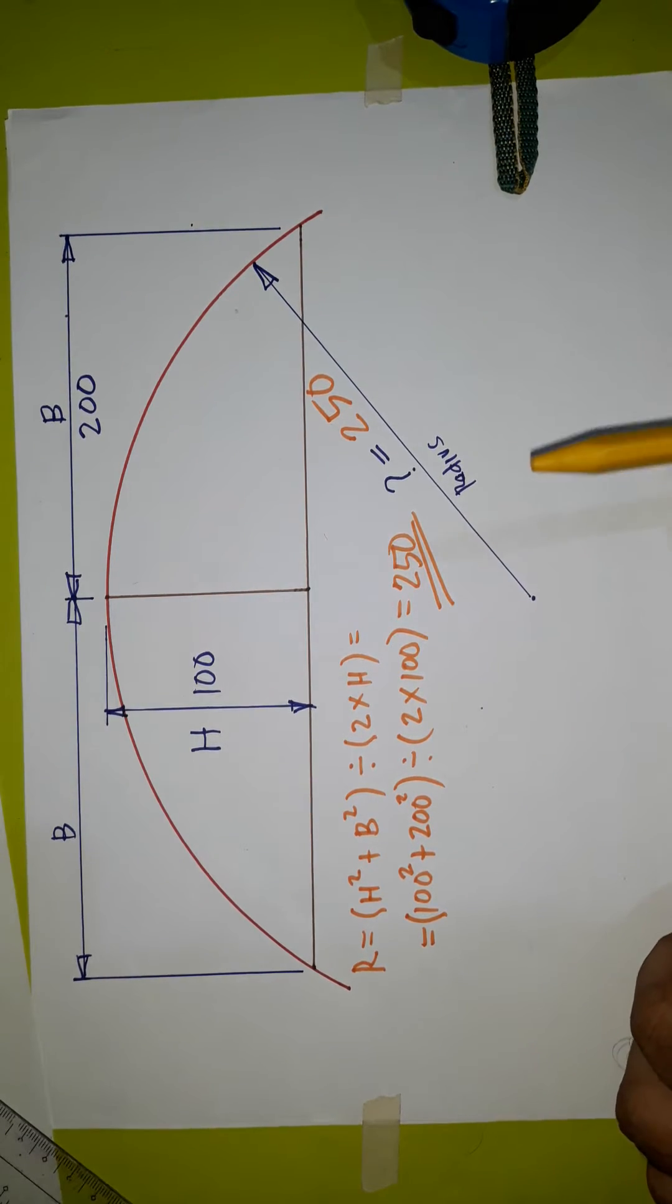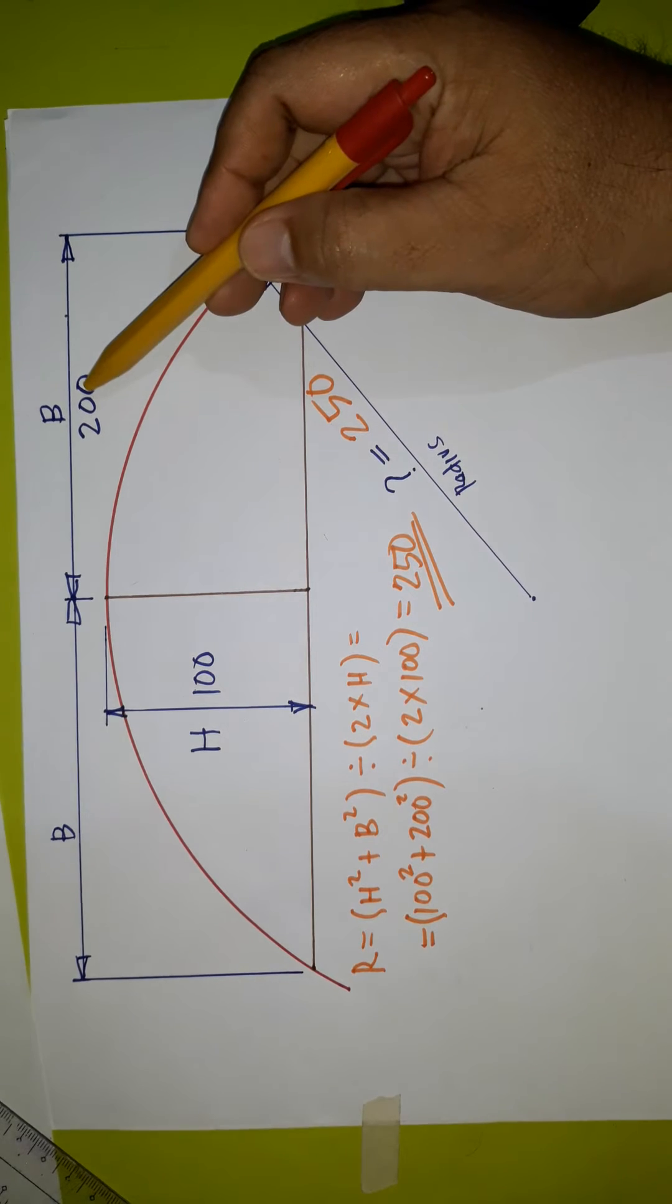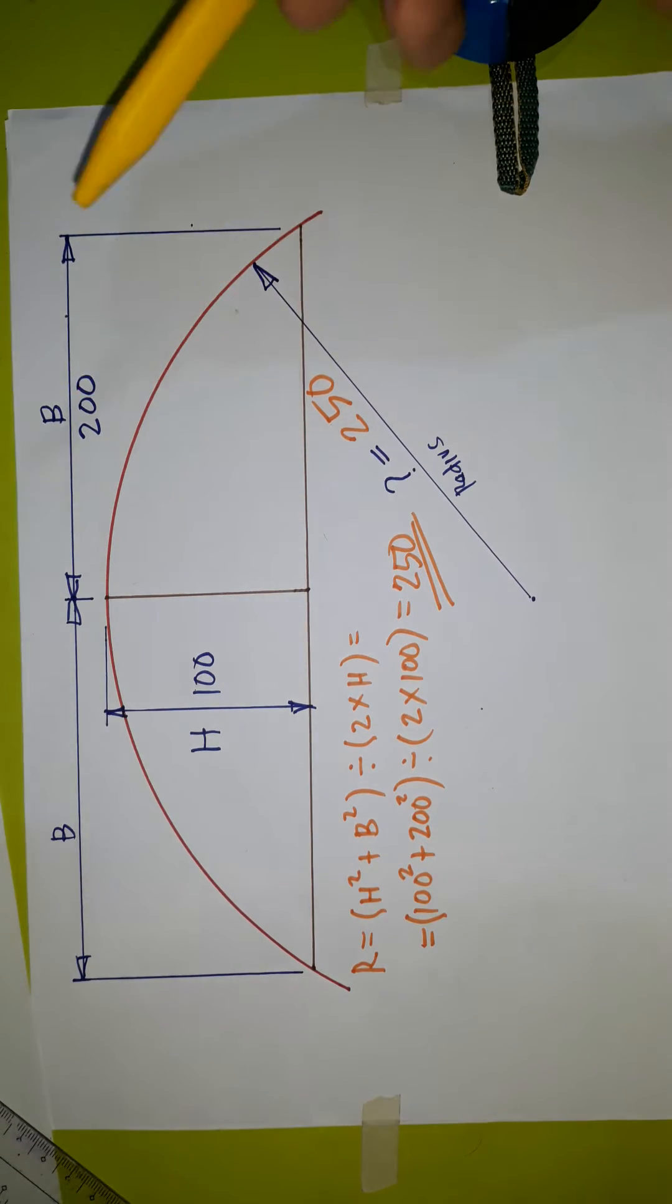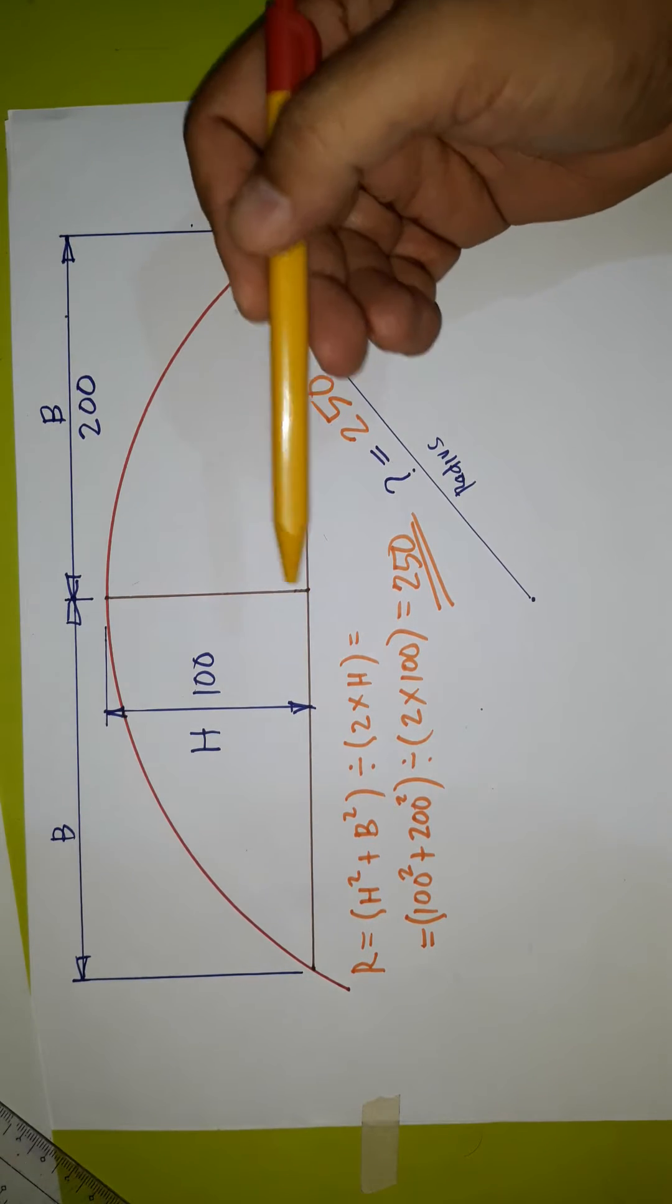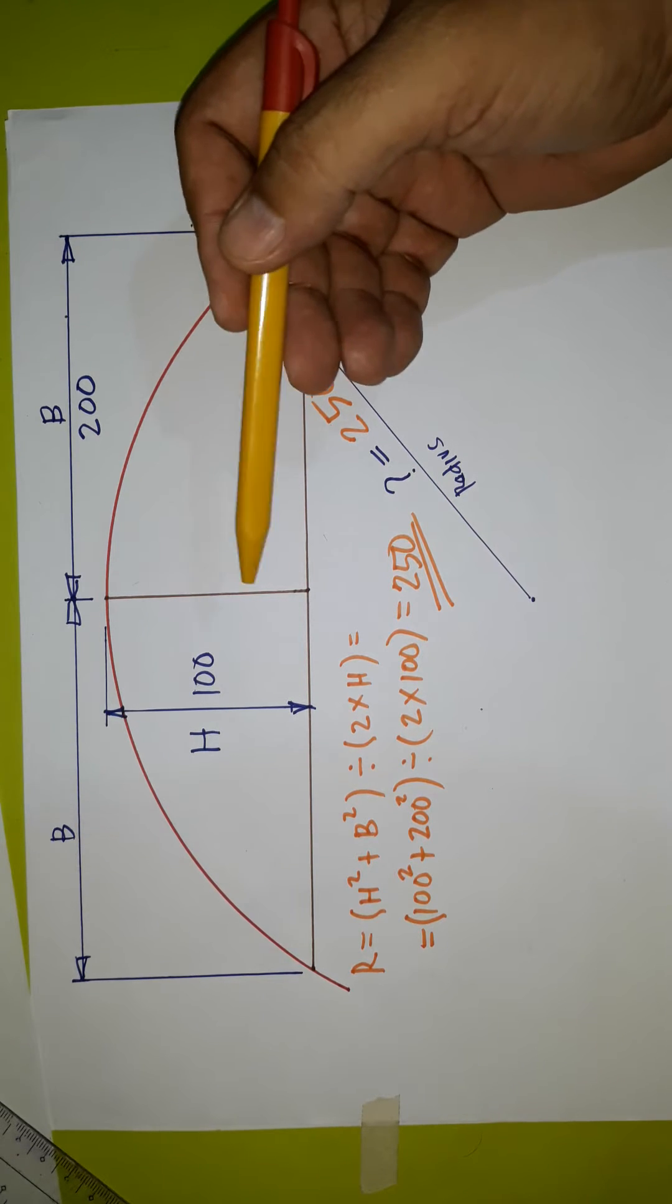In our example we have here 100 and 200. This information is very useful for the pipers and fabricators. This is for you guys.